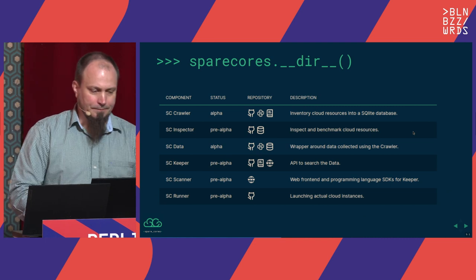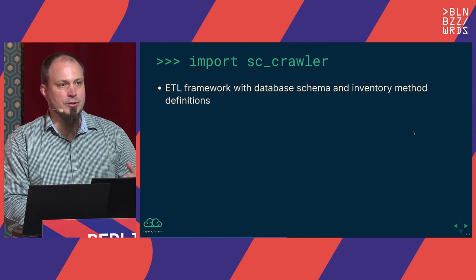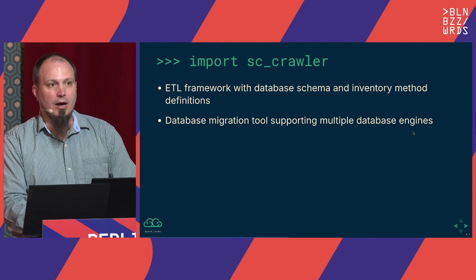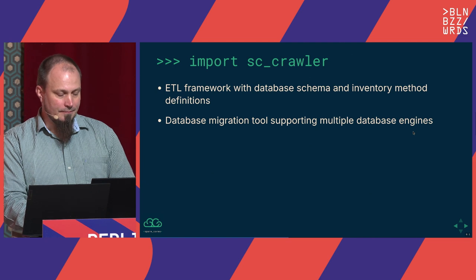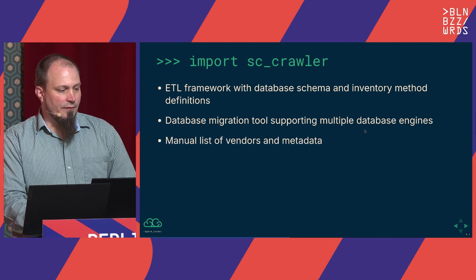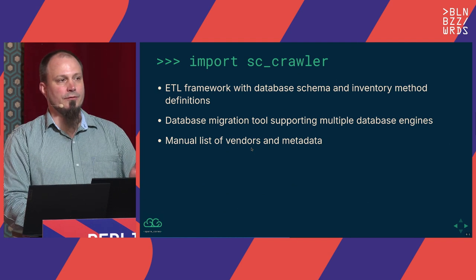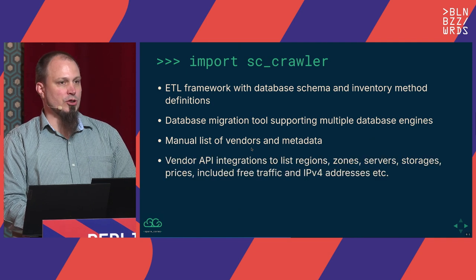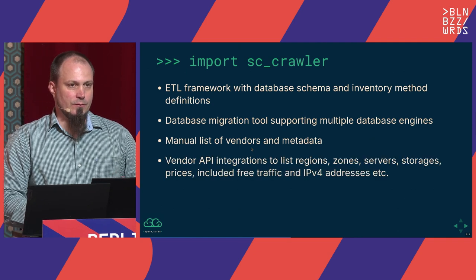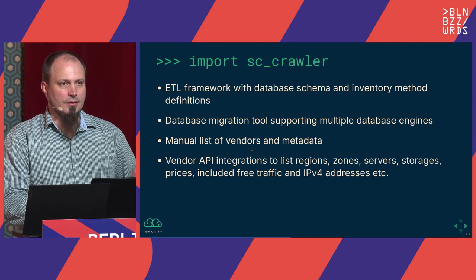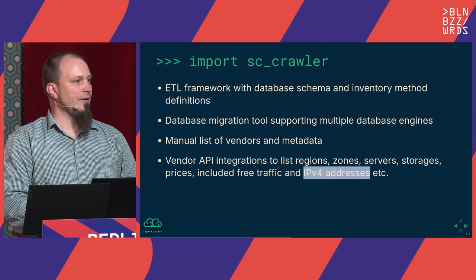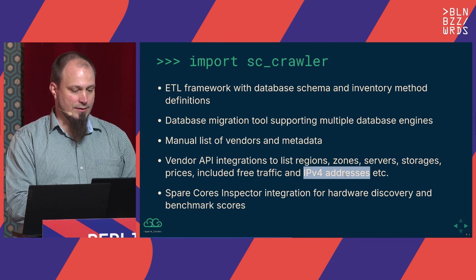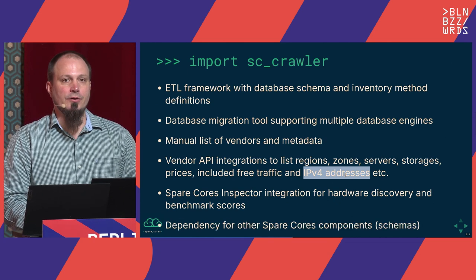All this data is made available by a list of components. The first is the crawler — our data ingest framework defining the database schemas and also how we can get data from vendor APIs. We provide some manual lists for vendors and metadata like when vendors were founded and which compliance frameworks have been implemented. There are a lot of API integrations — not only standard things like server prices, but also IPv4 address prices, which have been relatively new in the past few months. We also integrate hardware discovery and benchmark results.